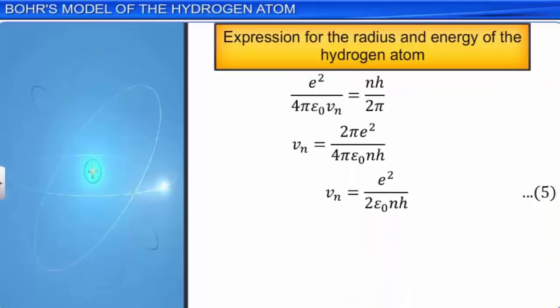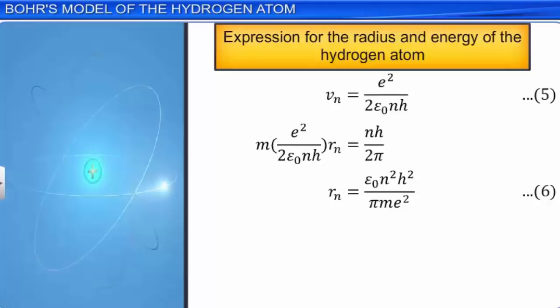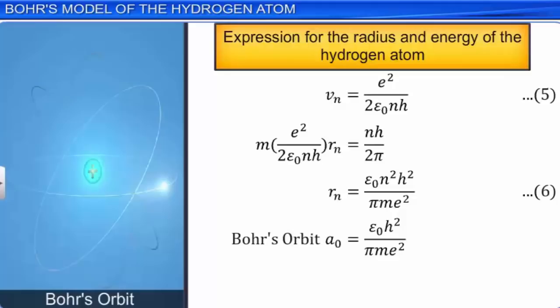By substituting n = 1 in equation 6, we get the radius of the innermost orbit, which is Bohr's radius, represented by a₀. Given a₀ = ε₀h²/(πme²). Substituting the values of Planck's constant h, ε₀, and the magnitude of the charge of the electron e, and simplifying, we get a₀ = 0.529 × 10⁻¹⁰ meter, which is equal to 0.529 Å. From equation 6, it is clear that the radii of orbits are directly proportional to n².